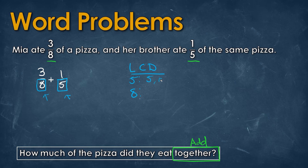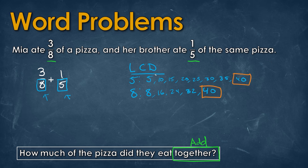Starting with 5 we'll have 5, 10, 15, 20, 25, 30, 35, and 40. For 8 we'll have 8, 16, 24, 32, and 40. We notice we reach 40 in both lists, meaning 5 times 8 gives us 40 and 8 times 5 gives us 40. So we're going to multiply each fraction by either 8 or 5, both top and bottom, to get a denominator of 40.